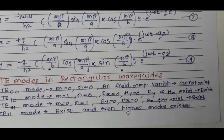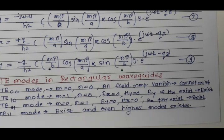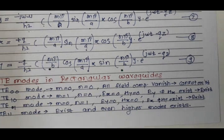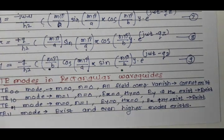This is all about the propagation of TE waves through the rectangular waveguide. We have seen the field components as well as which modes are possible and which modes are not possible. Thank you.